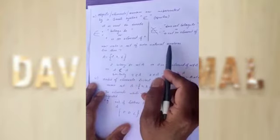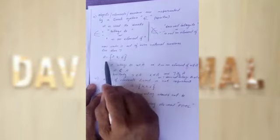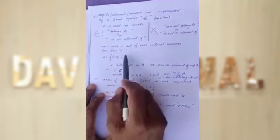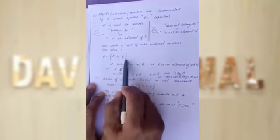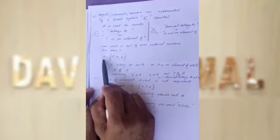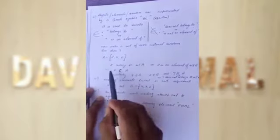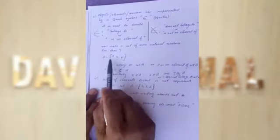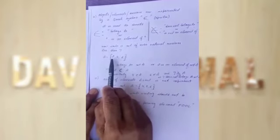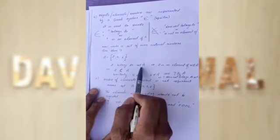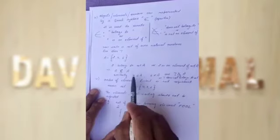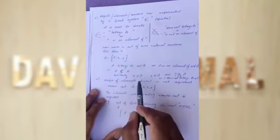Consider this example: write the set of even natural numbers less than 7. The even natural numbers less than 7 are 2, 4, and 6, separated by commas and enclosed within curly brackets. We represent this whole set by capital A. Now, 2 is present in the set, so 2 ∈ A. Similarly, 4 ∈ A.